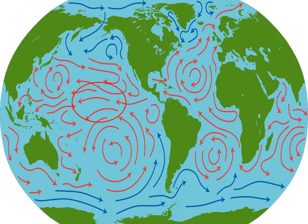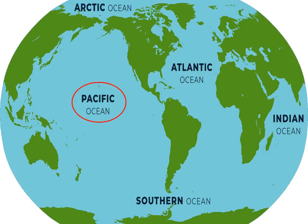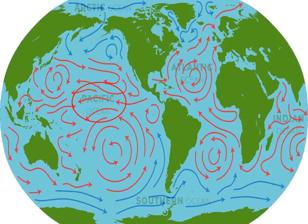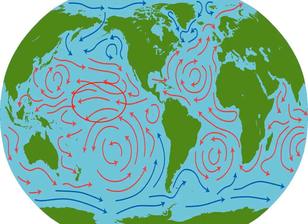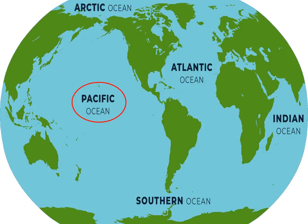Let us start with the Pacific Ocean. The Pacific Ocean lies between America in the east and Asia and Australia in the west. It is the biggest ocean on the earth and covers almost one-third of the earth's surface. It is also the deepest ocean in the world. The Mariana Trench in the Pacific Ocean is the deepest point on earth's surface.